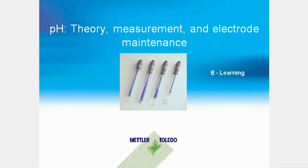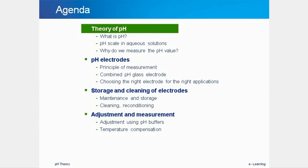This is a brief presentation about pH theory, sensors, sensor maintenance and measurement of the pH value of a sample. During this presentation a brief overview of pH theory and measurement of pH values is given. We look at the chemical background of the pH value, at the electrodes which measure pH values and how to use these electrodes.